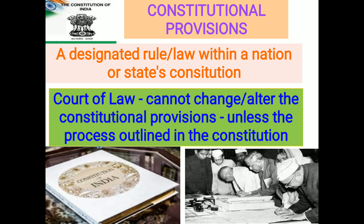For the success of federalism, what is required? It is said that constitutional provisions are necessary for the success of federalism, but these are not sufficient. A constitutional provision is a law that is written in the constitution itself and does not come from a rule or a statute. It establishes the basic rights, duties, and structure of the polity. These provisions cannot be easily altered except by the amendment procedure given in the constitution itself.